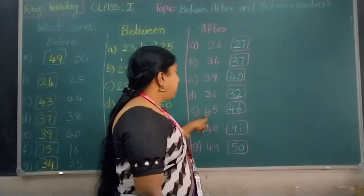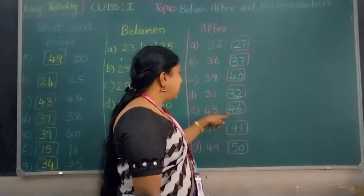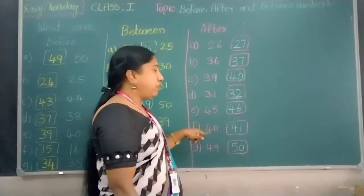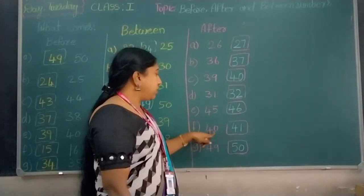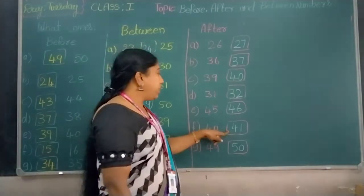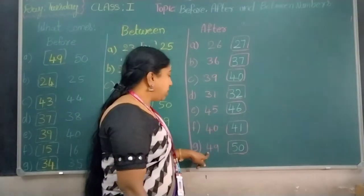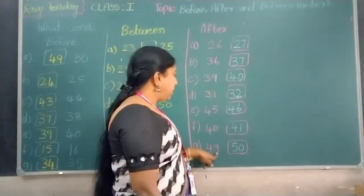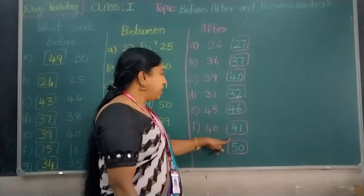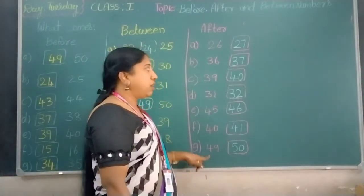What comes after 45? Number 46 comes after 45. What comes after 40? Number 41 comes after 40. What comes after 49? Number 50 comes after 49.